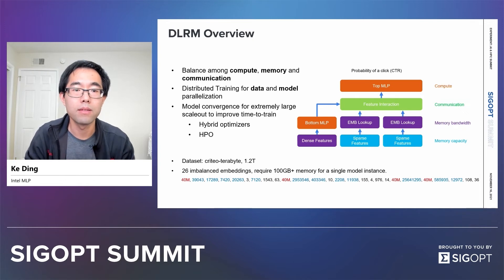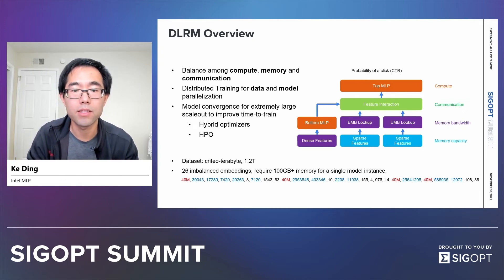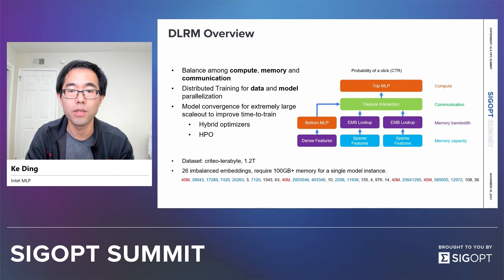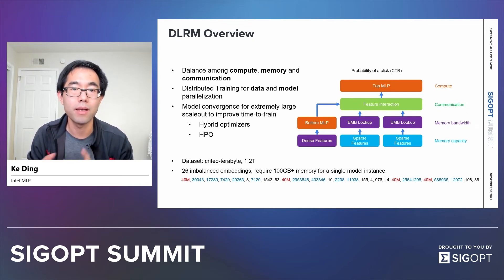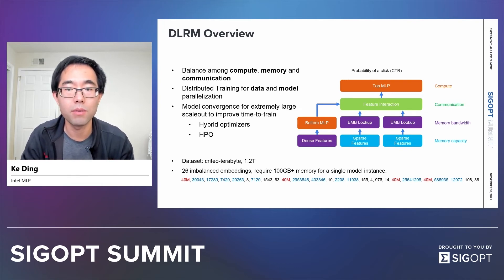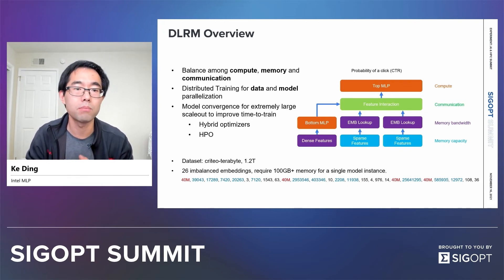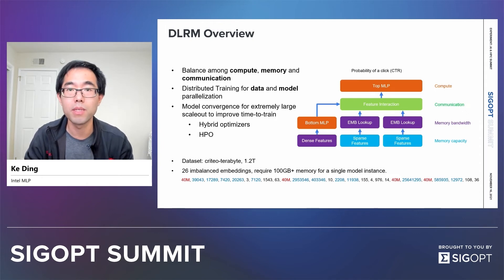With all this, DLM poses unique challenges on distributed training because of the need to balance compute, memory, and communication. The model is so large that we need to use both model and data parallelization in order to speed up the training.